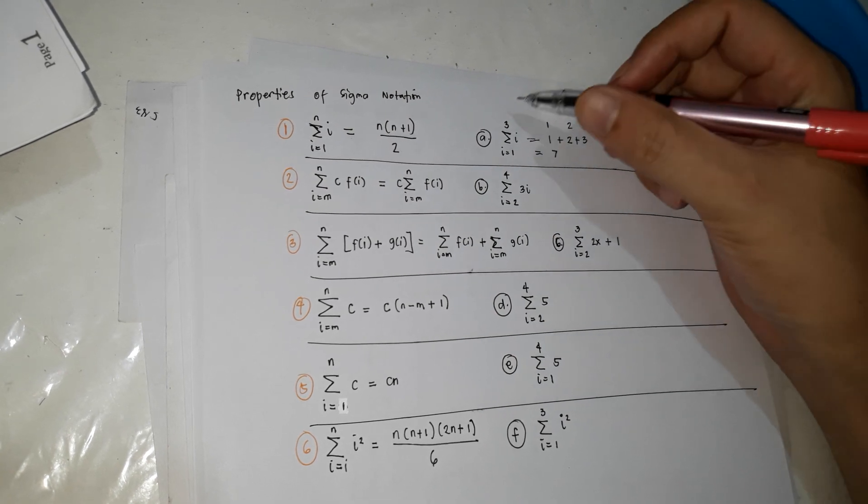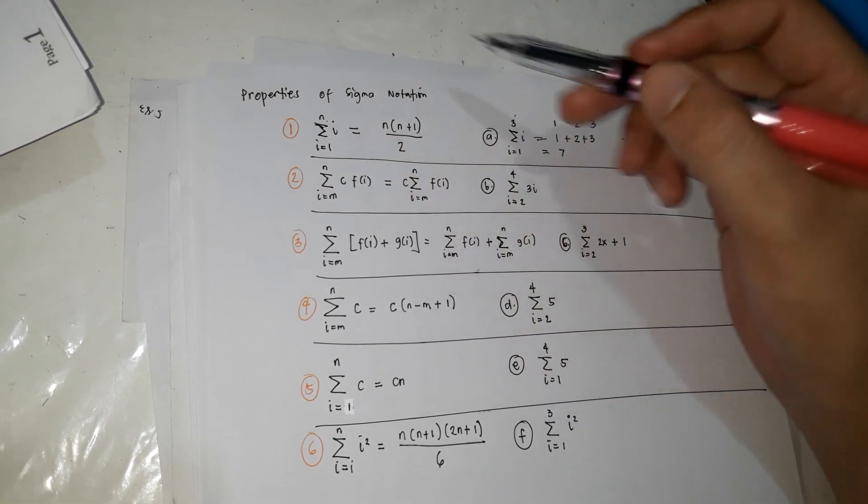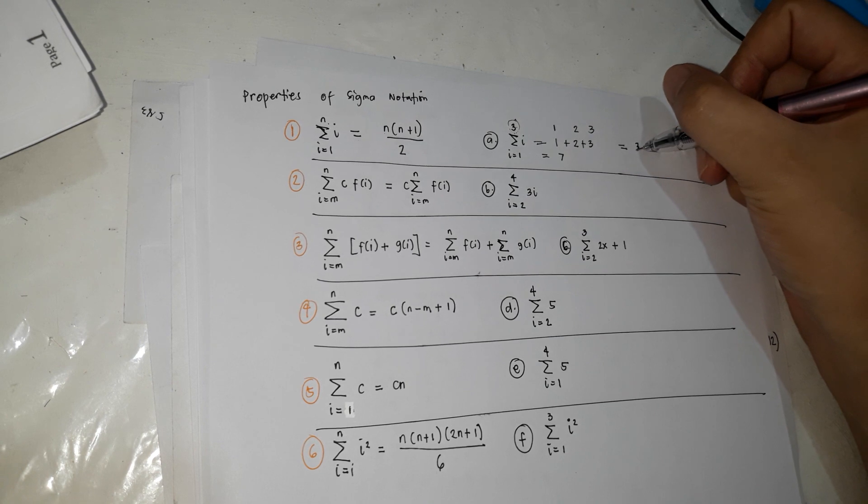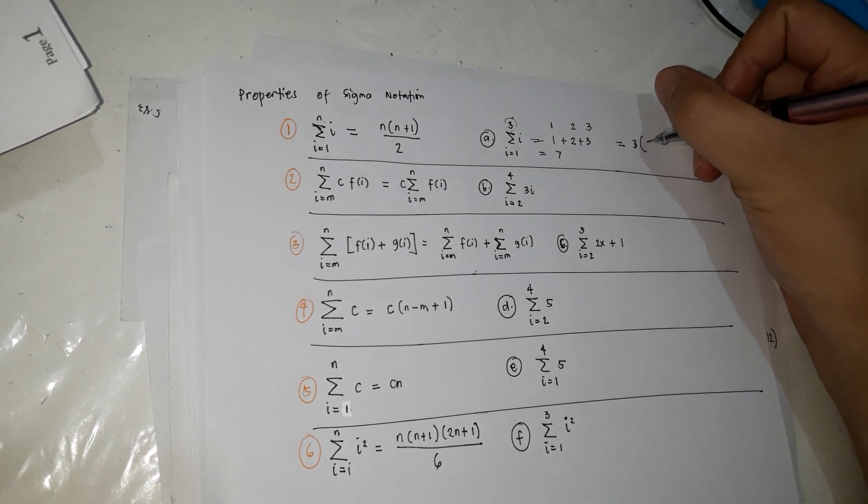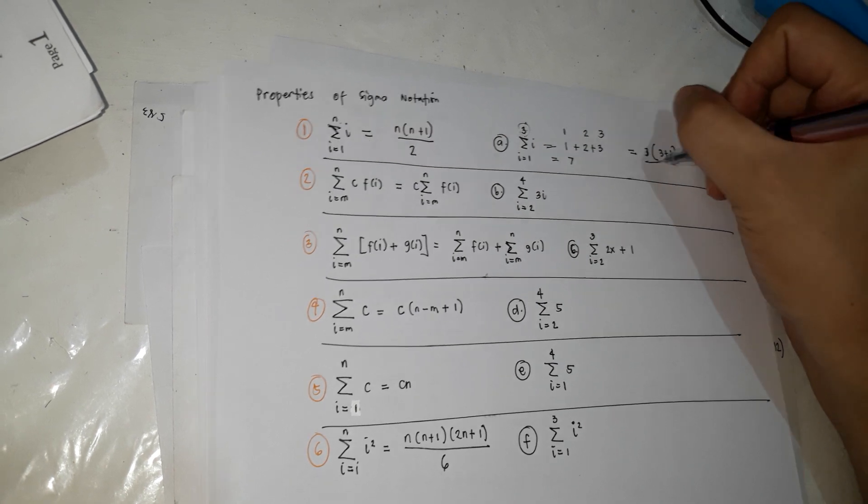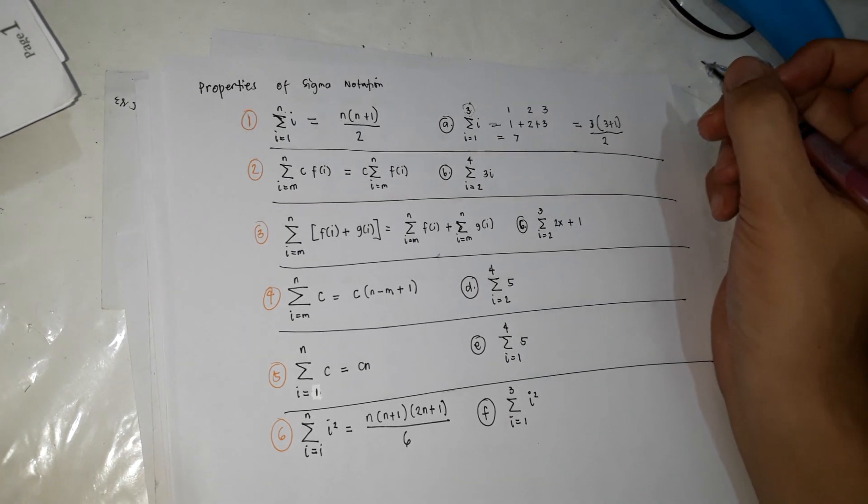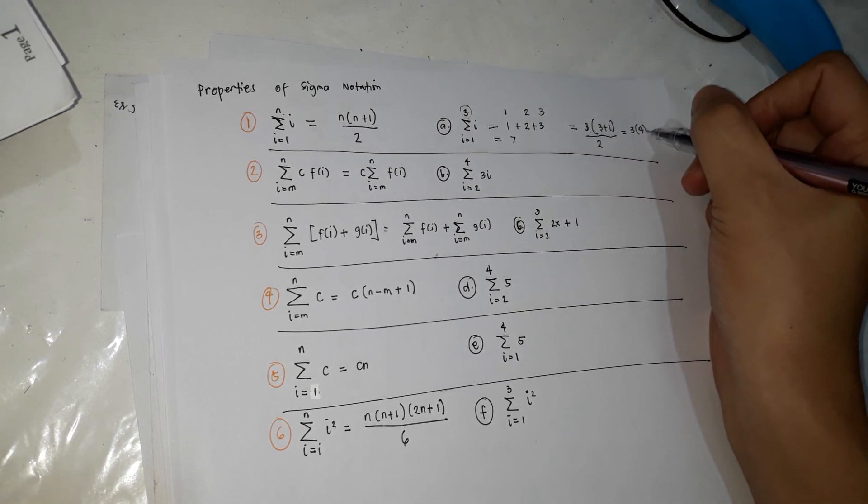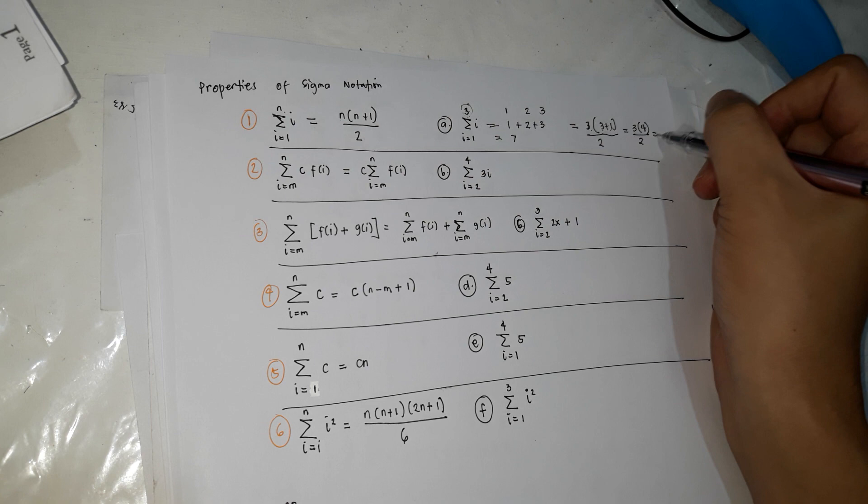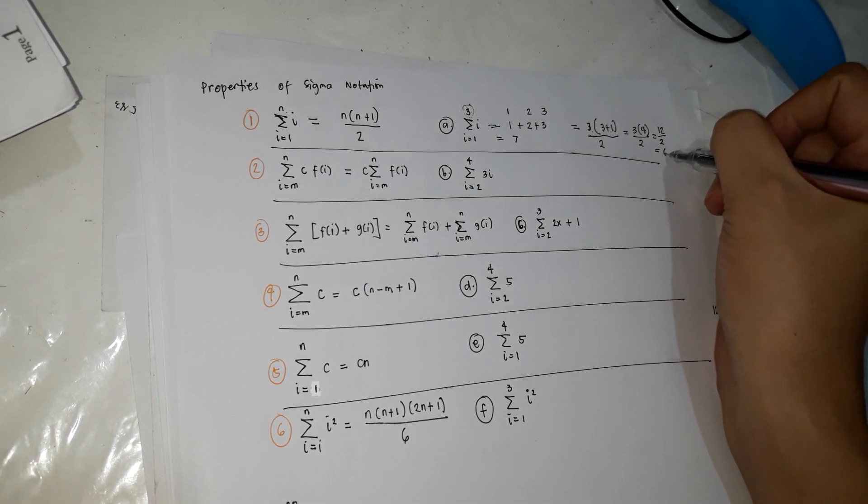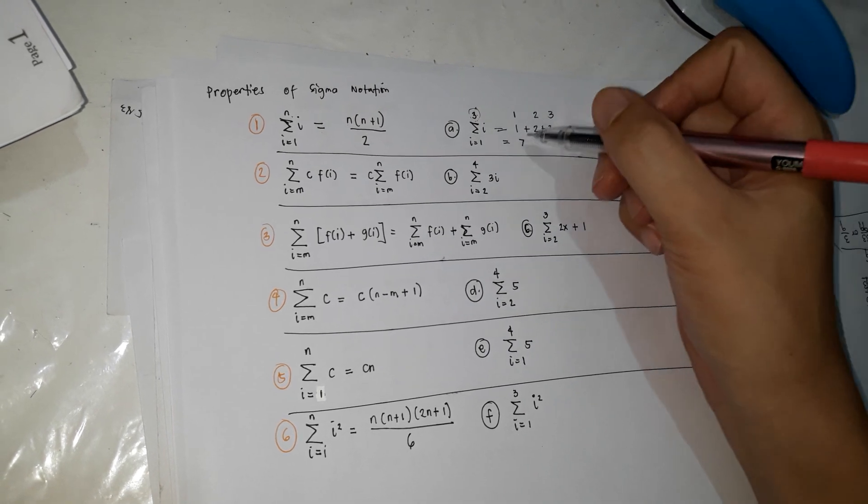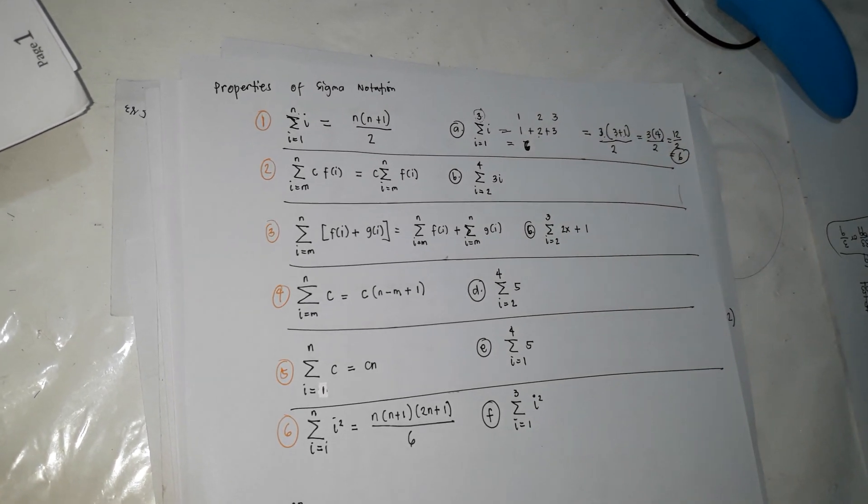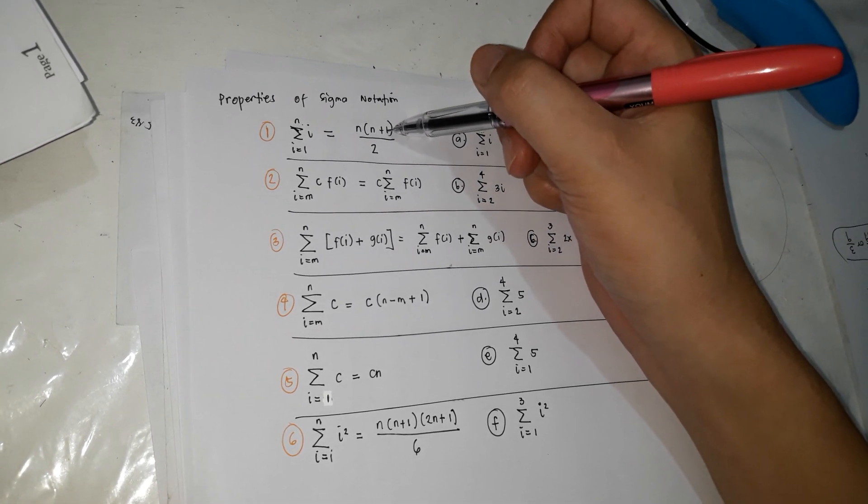Na instead na mag 1, 2, 3, 1 plus 2 plus 3. So instead of you doing this, you can simply use this one. So this is almost the same. So n, which is 3, 3 plus 1, it's 3 plus 1 divided by 2, which is equal to 3 times 4 over 2, which is equal to 12 divided by 2, which is equal to 6.